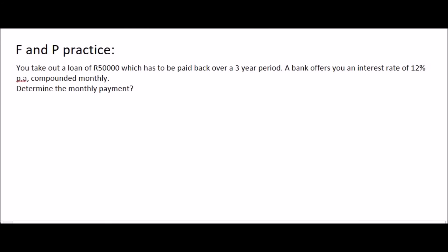Here we have a different question. You take out a loan of 50,000 Rand, which has to be paid back over a 3 year period. A bank offers you an interest rate of 12% per annum, compounded monthly. Determine the monthly payment. So that means you go to a bank and you ask them for 50,000 Rand. They will give you the 50,000 Rand. However, you will have to pay it back over a period of 3 years using monthly payments. So we always have to make a decision between F and P.